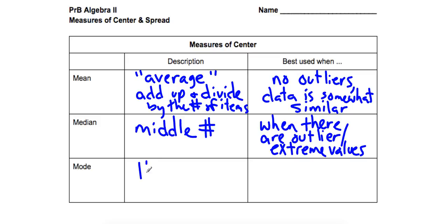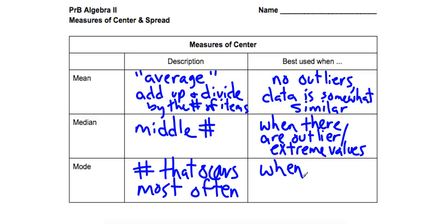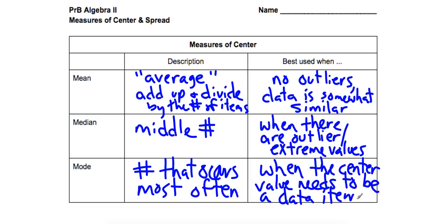The mode is the number that occurs most often. Most often. I apologize for my cursive. It's best used when you want your middle value, when it doesn't make sense to have a decimal value for your median and mean. So when the center value needs to be a data item.